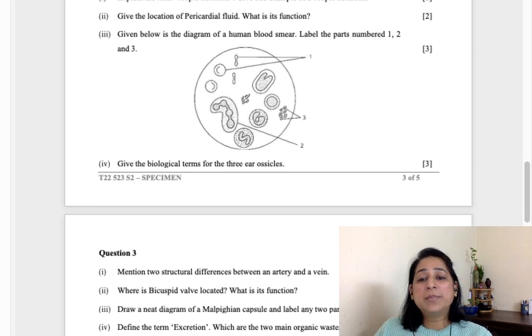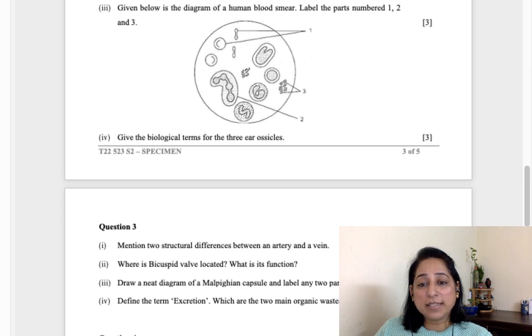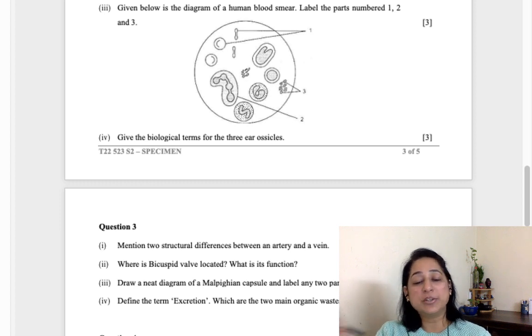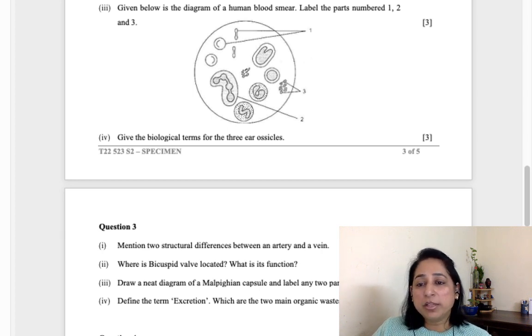Let's move to the questions. It is clearly mentioned any three but we will solve all. Explain the term trophic hormones and give one example. Trophic hormones are the hormones which are responsible for controlling the other hormones. They directly do not perform any action, they control the secretion of other hormones from the glands. One example is TSH, thyroid stimulating hormone. TSH is secreted by pituitary - if TSH will not be produced, thyroxine will not be produced by thyroid gland. So it's a two mark question, one mark for this and one mark for this.